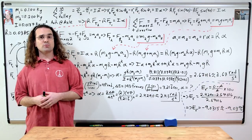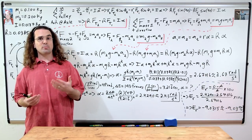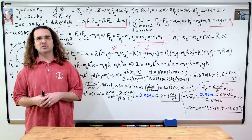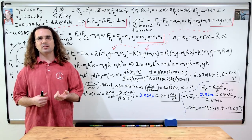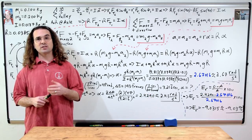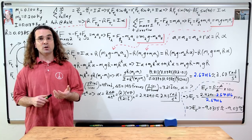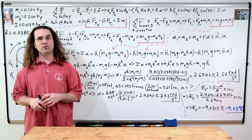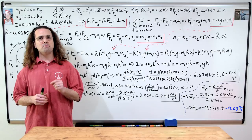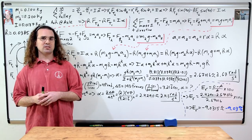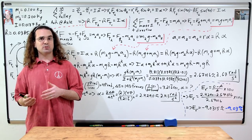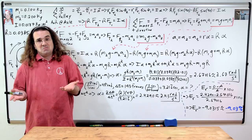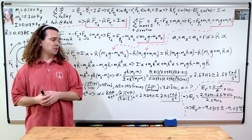Using the relative error equation with the measured angular acceleration as the observed value and the predicted as the accepted value, we get a percentage difference of negative 9.03%. So our measured angular acceleration was about 9% less than the predicted. That's pretty close.